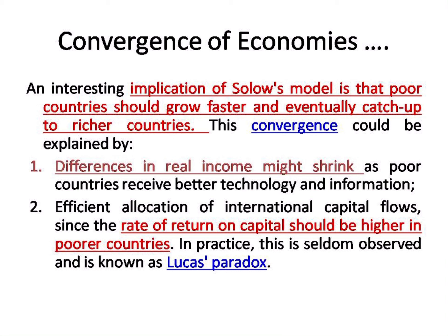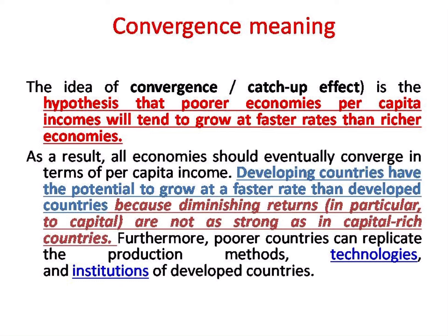Convergence is explained by the difference in real income, which shrinks as poor countries receive better technology, information, and efficient allocation of international capital flows, since the rate of return is higher in poor countries. The idea of convergence is basically the catch-up effect hypothesis — poor countries' per capita income tends to grow at a faster rate than rich countries. Developing countries grow faster compared to developed countries because of diminishing returns to capital.